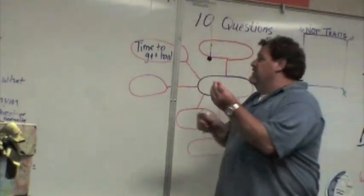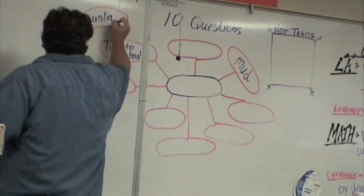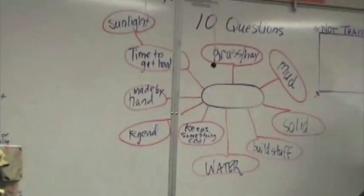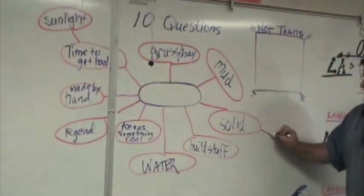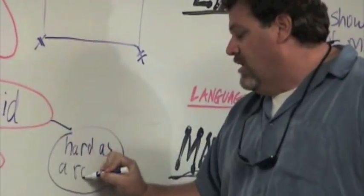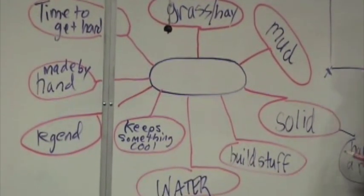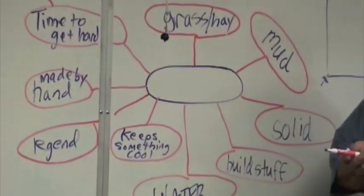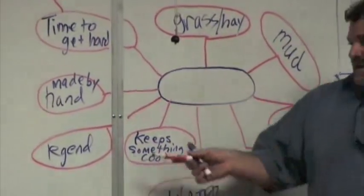It does need sunlight. Because sunlight helps it — it's very hard. Is it hard as a rock? It can be hard as a rock, or solid. Hard as a rock is a simile. It is solid. You build stuff with it. It keeps something cool. It can be considered a legend, part of history. Made by hand.